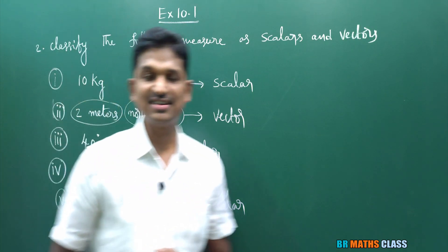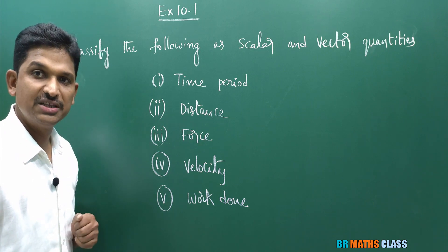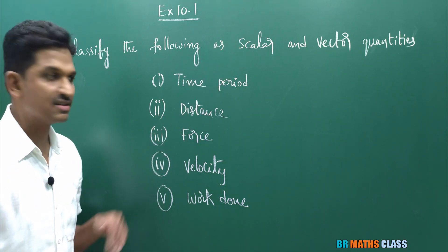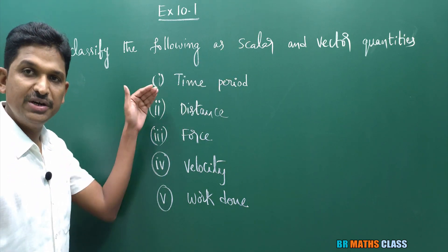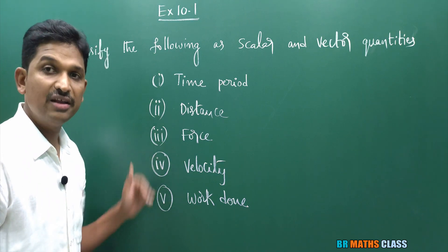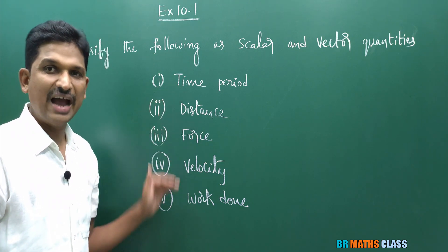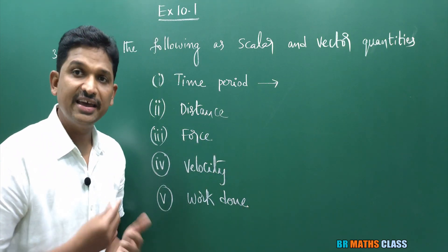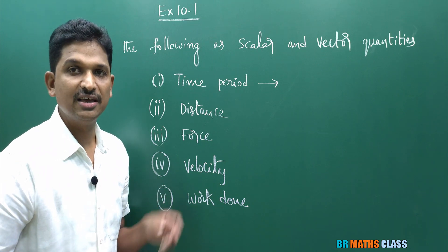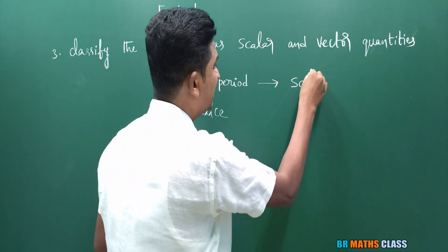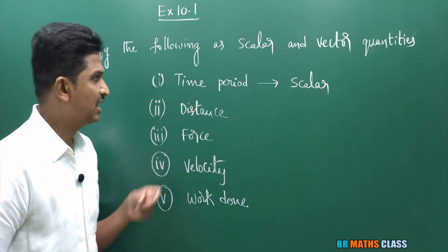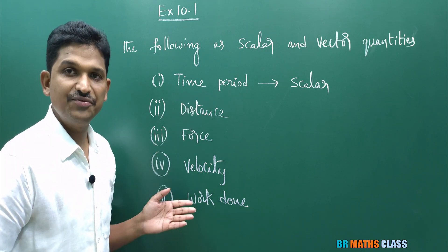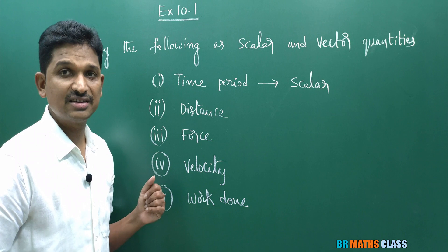Question number 3: Classify the following as scalar and vector quantities. They have given 5 terms. These are standard terms. Time period — since time is a scalar quantity, time period is a scalar. Distance is also a scalar quantity — it is a physical quantity having only magnitude but no direction. Those studying physics can easily identify whether these are vectors or scalars.